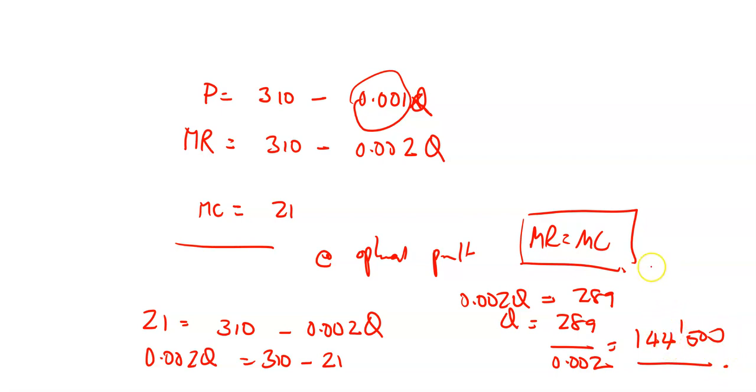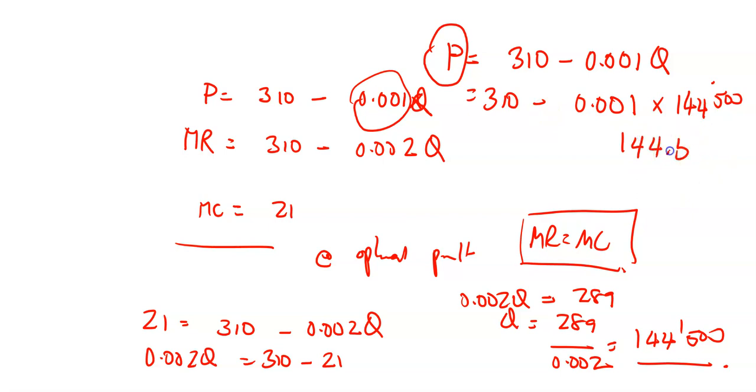The final question is asking, what's the selling price for this quantity? I know that P equals 310 minus 0.001Q. Literally 310 minus 0.001 times 144,500. That's 310 minus 144.5, which gives you 165.50. So that's question 3, and that takes us to B.